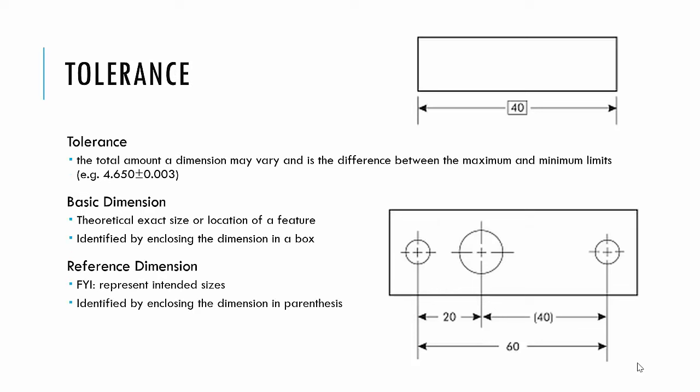Tolerance is the total amount a dimension can vary, and it's the difference between the maximum and the minimum limits. The basic dimension is the theoretical exact size or location of a feature. We show that, you can see in the upper right corner there, by enclosing that dimension in a box. You can see that that feature is supposed to be 40, whatever the units are. I would assume that's millimeters. That would be the basic dimension.